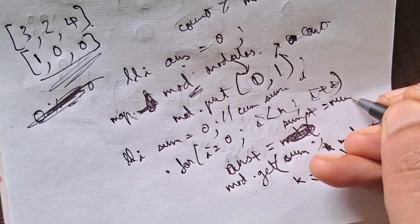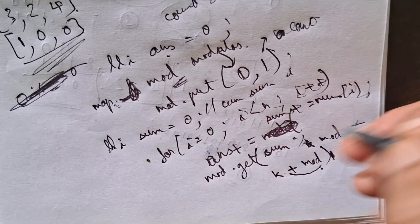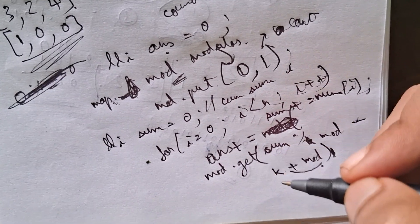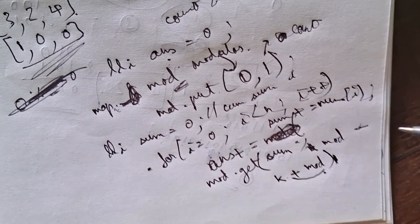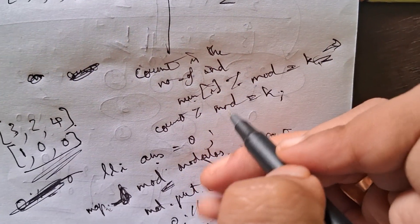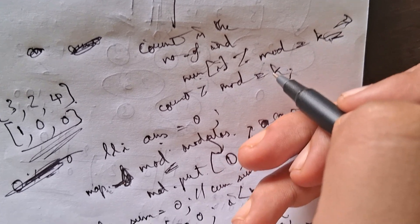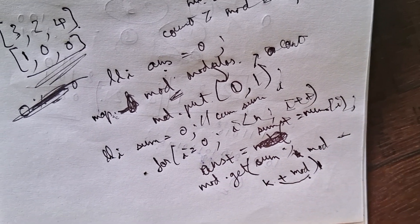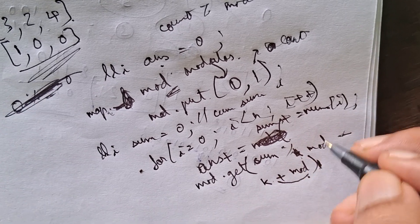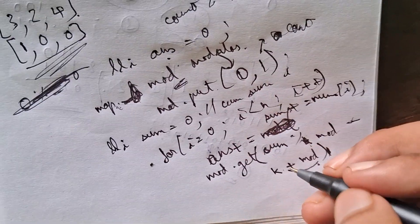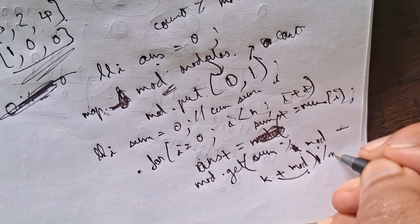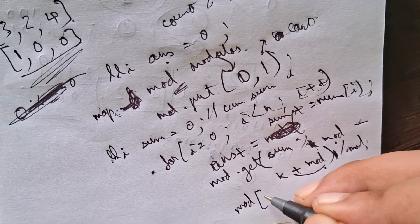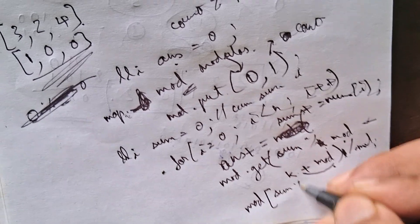We also update sum by adding nums[i] each iteration, since sum is the cumulative sum of all elements from index 0 to i. After computing the answer contribution, we update mod_map at the key (sum mod modulo), incrementing its count. The plus modulo in the formula handles cases where sum mod modulo minus k is negative.